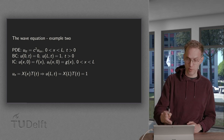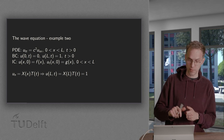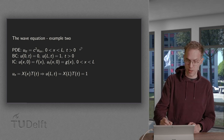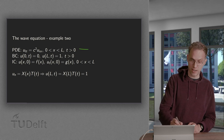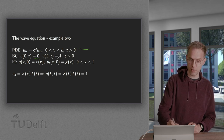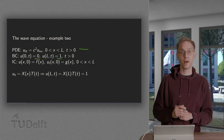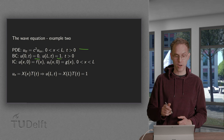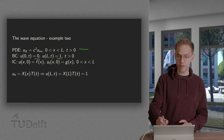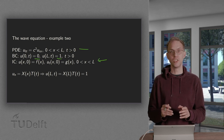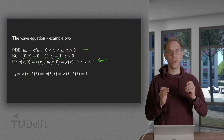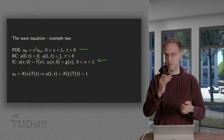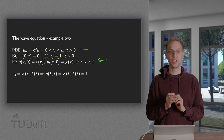Here we have our wave equation. On the left boundary we are zero, but on the right boundary we are one. We have some initial conditions, which we will specify later on. For now, we just put f of x and g of x.